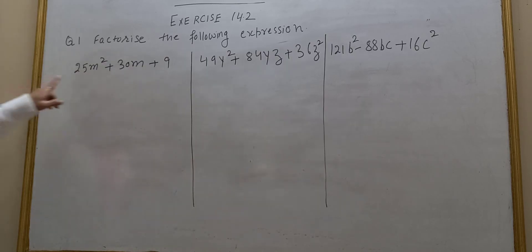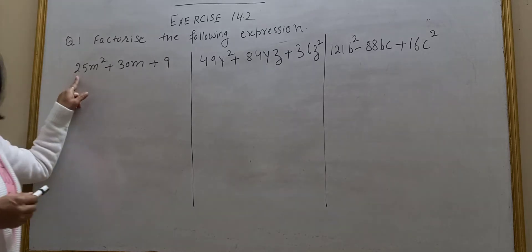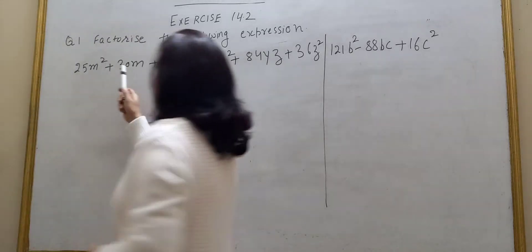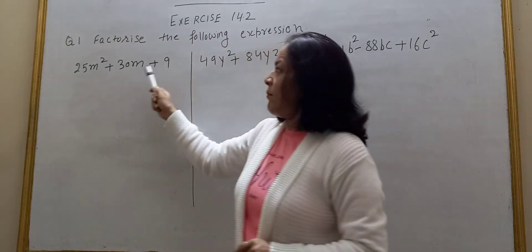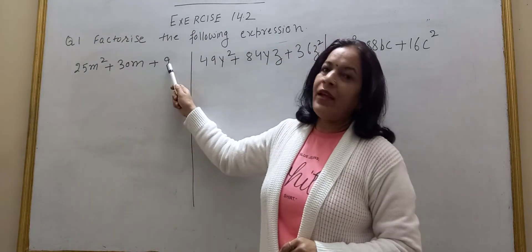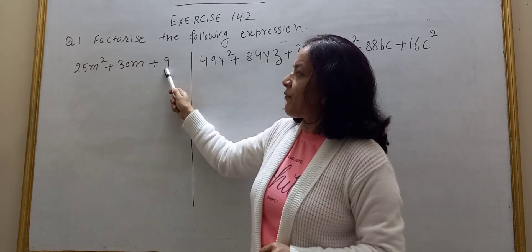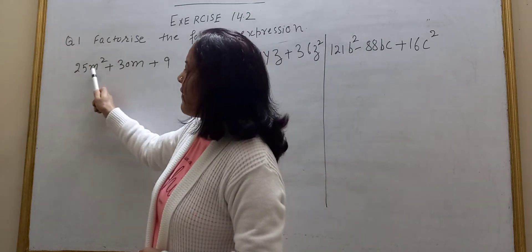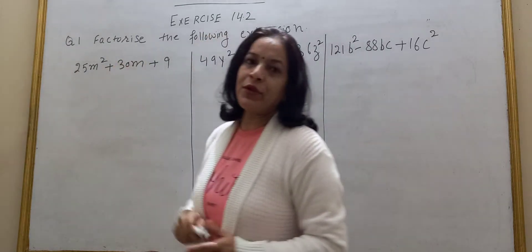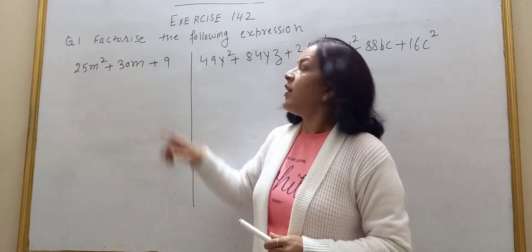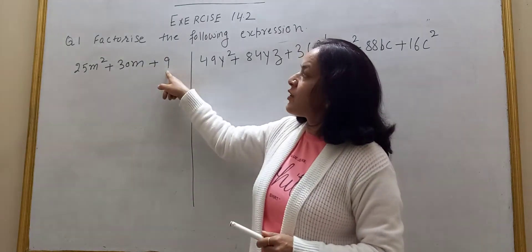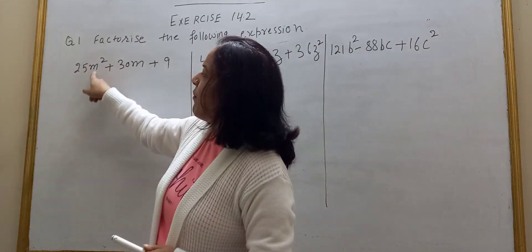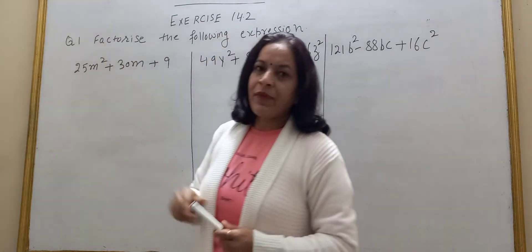Next expression is 25M squared plus 30M plus 9. Again, 9 is a perfect square and 25M squared is also a perfect square. 9 is the square of 3 and 5M is the square root of 25M squared. Clear?